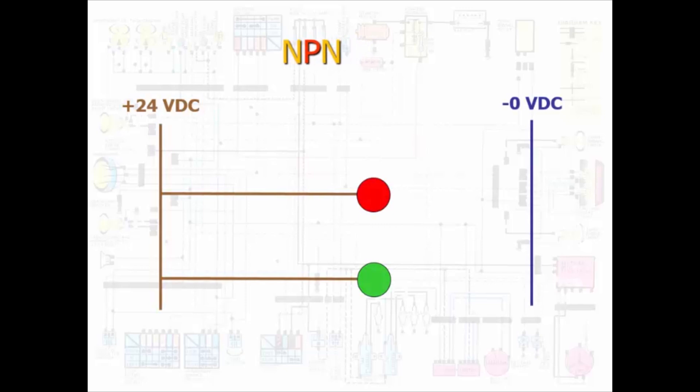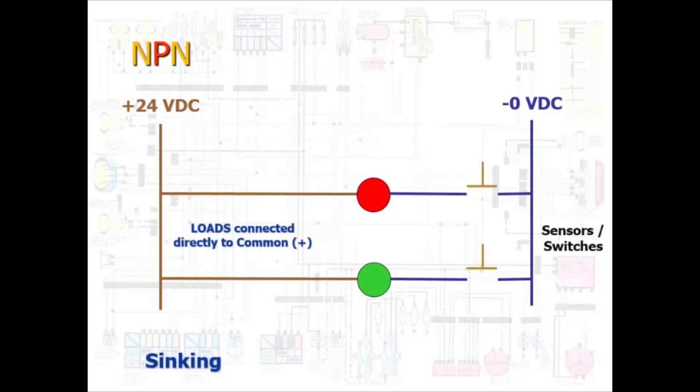This is an NPN circuit where the loads are already powered from the positive common but still need some switch input to connect the circuit to the negative common. The voltage is trying to sink from 24 volts down to zero.